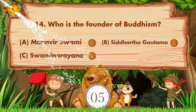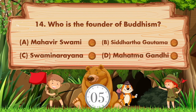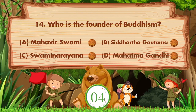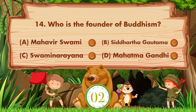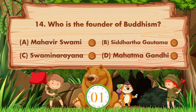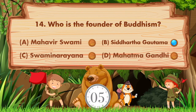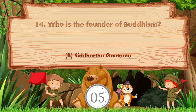Who is the founder of Buddhism? Option A is Mahaveer Swami, B is Siddhartha Gautama, C is Swami Narayan, D is Mahatma Gandhi. The answer is option B, Siddhartha Gautama.